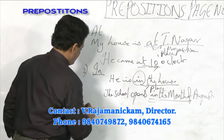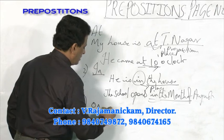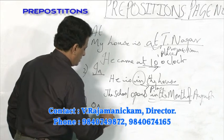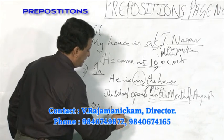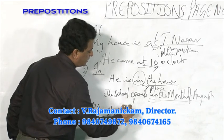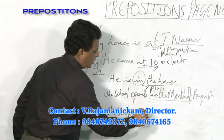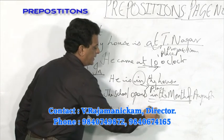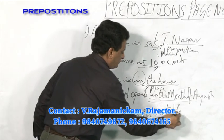Now, the next preposition is 'on'. The book is on the table. Table is a noun. 'On' comes before the noun.